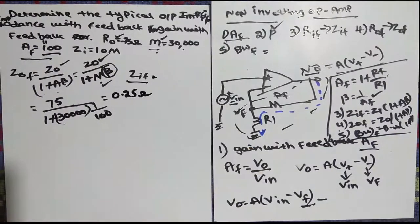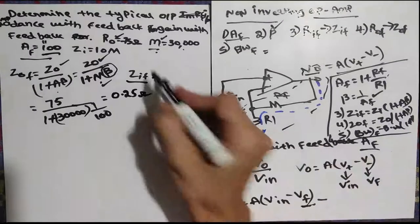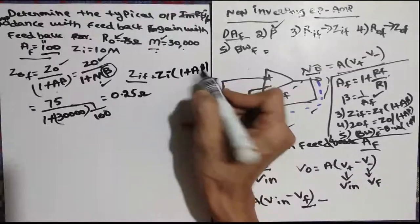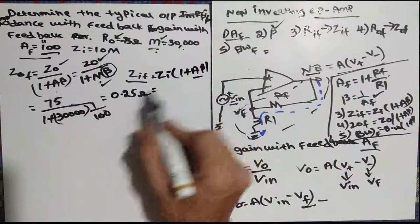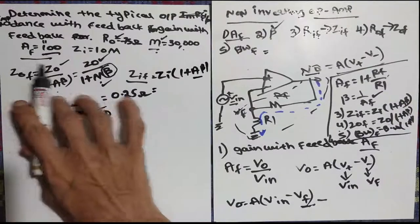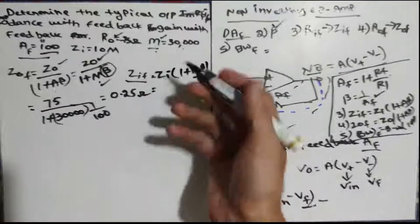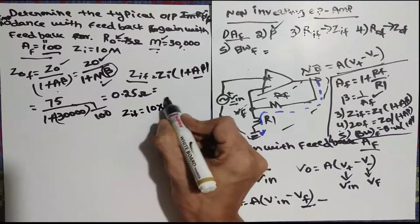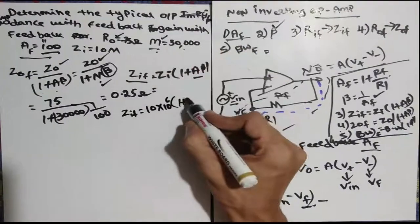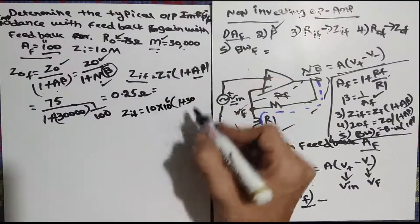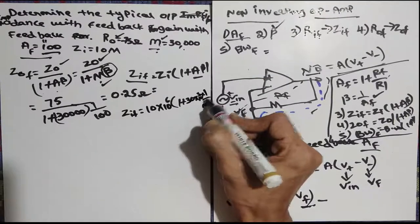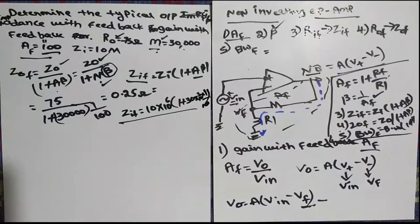For Zif: formula is Zi times (1 plus Aβ). Zi = 10 MΩ = 10 × 10⁶. So Zif = 10 × 10⁶ × (1 + 30,000 × 1/100) = 10 × 10⁶ × 301. Simplify to get a very high Zif value. This is how we solve the problem.